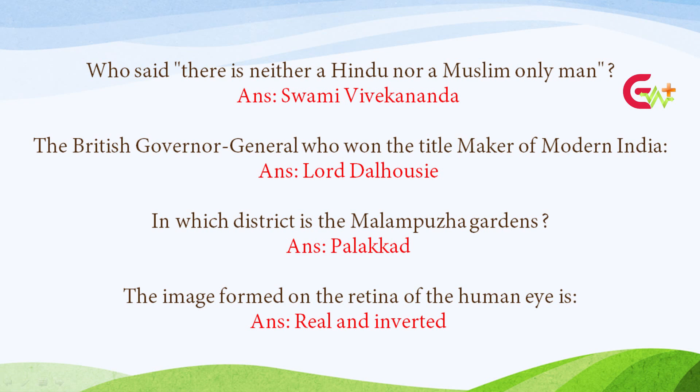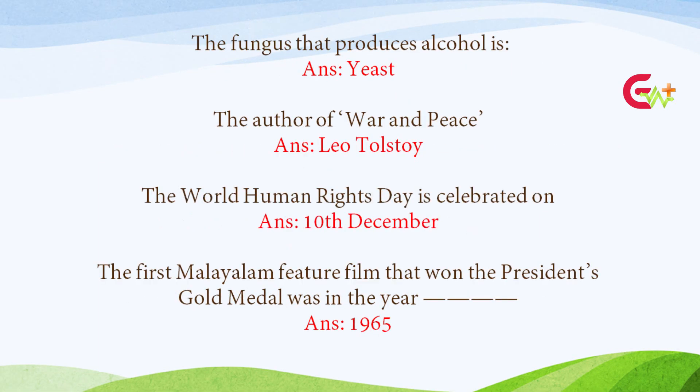The image formed on the retina of the human eye is? Answer: Real and inverted. The fungus that produces alcohol is? Answer: Yeast. The author of 'War and Peace'? Answer: Leo Tolstoy. The World Human Rights Day is celebrated on? Answer: 10th December.